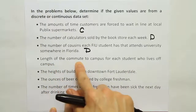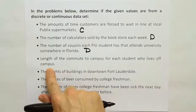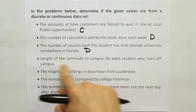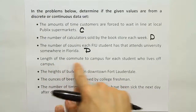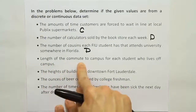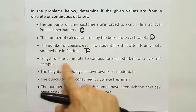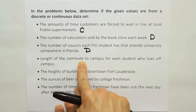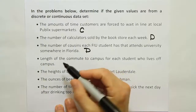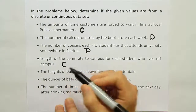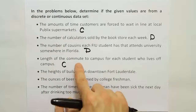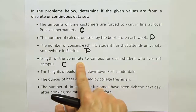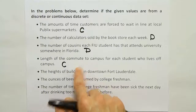The length of the commute to campus for each student who lives off campus. The length of commute would be measured as some kind of a distance, maybe in miles or yards. Or if you're not measuring it in distance, you can measure it in time — how long it took. Either way, those are measurements. I would say that data is continuous because you could live 2.3 miles from campus or 2.31 miles from campus. Any decimal or fraction is possible.